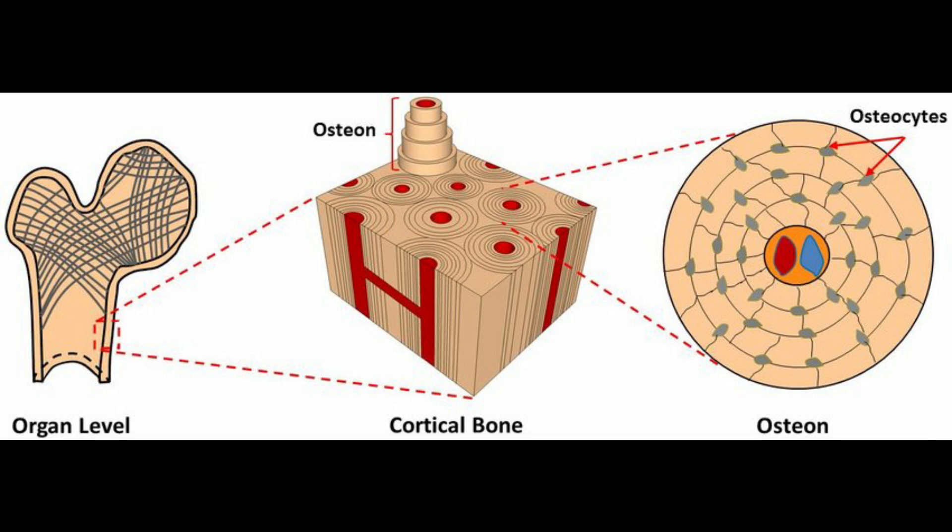At the organ level, if we cut a part of the bone and view it under a microscope, we see cortical bone. Zooming in further, we see an osteon, also known as the Haversian system. In the middle of the osteon is an opening called the central canal or Haversian canal, which consists of blood vessels and nerves. Inside the cortical bone we also see a perpendicular canal connecting to the central canal — this is called the perforating canal or Volkmann's canal.